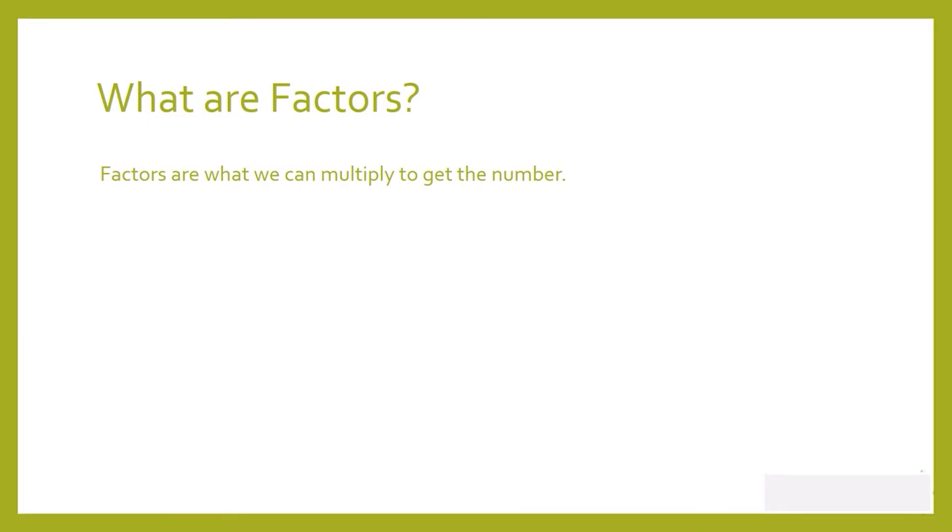If I ask the question, what are the factors of two? You have to think of the numbers that I can multiply to get two. What numbers can I multiply to get two? One times two. Can I multiply anything else to give me two? No. Even if I reverse it and say two times one will give me two, notice it's the same numbers, one and two. So one and two are the only factors of two.